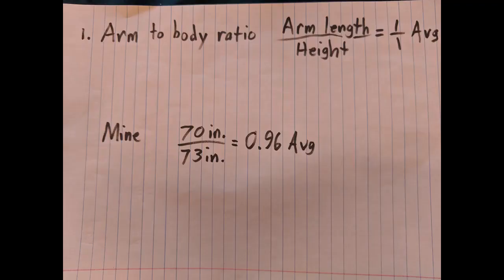Formula number one: arm to body ratio. My wingspan was 70 inches divided by my height of 73 inches, so I got 0.96, meaning my wingspan was just a little bit shorter — because it's supposed to be an even length with your height.